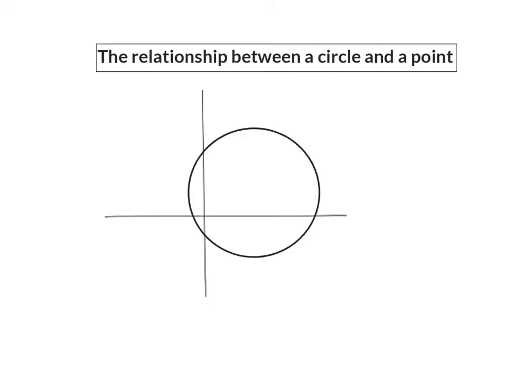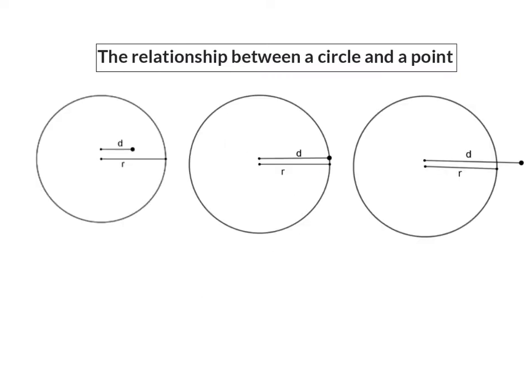When we focus on the relationship between a circle and a specific point or coordinate, there are three types of relationships. Firstly, the point can be inside the circle, or secondly it can be on the circumference of the circle, and the third option it can lie outside the circle. Let's have a look at how we can determine which of the three options it is without drawing an accurate sketch.